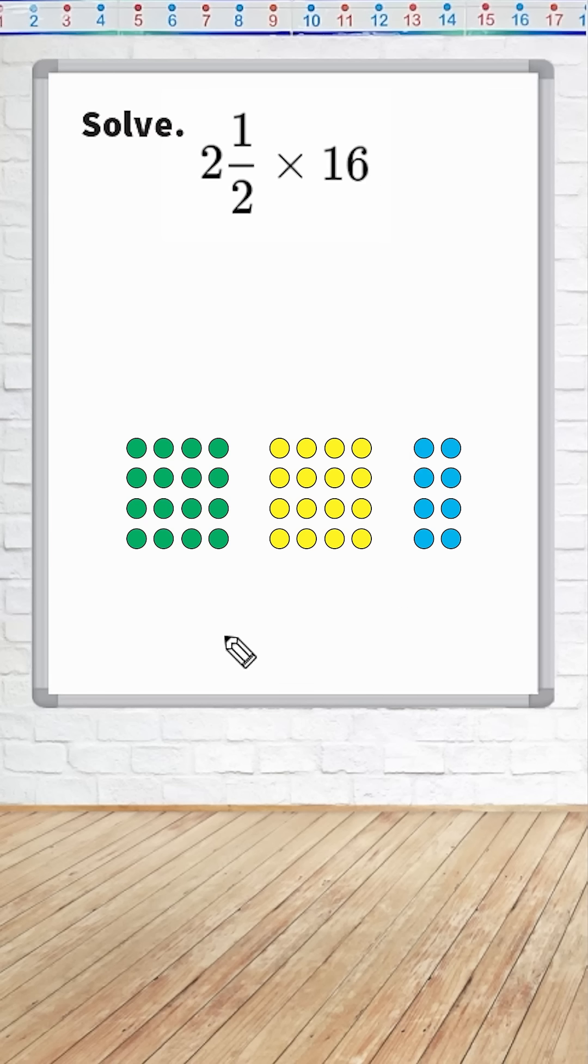So we have 16 plus 16, which is 32, plus 8 more, which is 40.